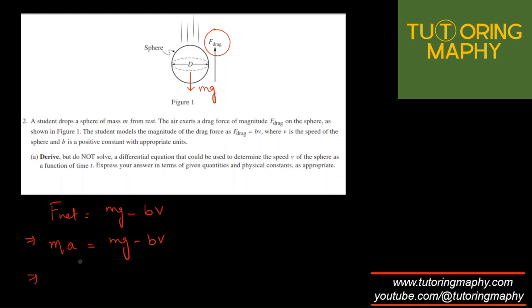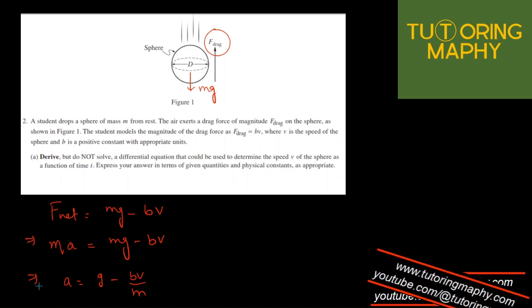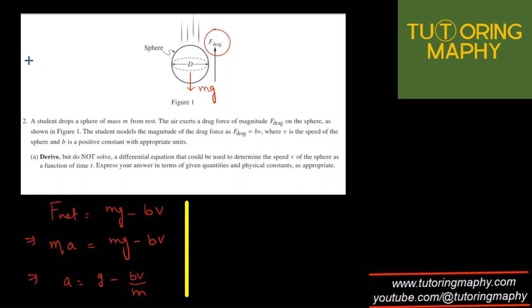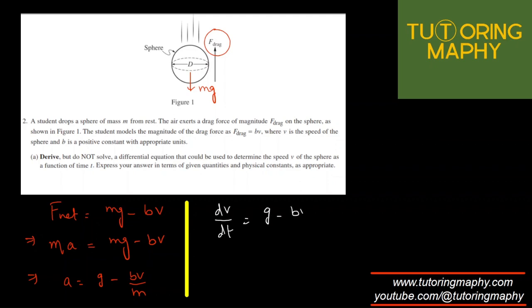Dividing both sides by m, we will get the value of the acceleration as g minus BV over m. And finally, since we need a differential equation which should relate velocity and time, we can replace acceleration with dV over dt. So finally, our answer is going to be dV over dt equals g minus BV over m. So this is the differential equation, and it relates velocity and time. Obviously, g, b, and m are constants. So that should be our final answer.